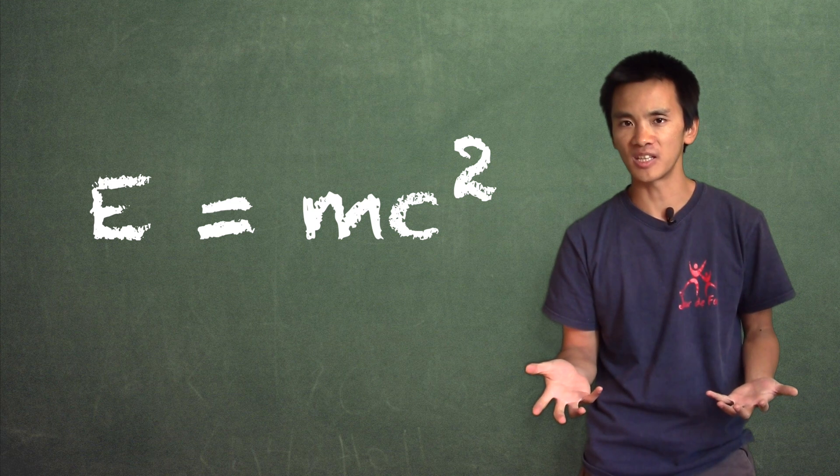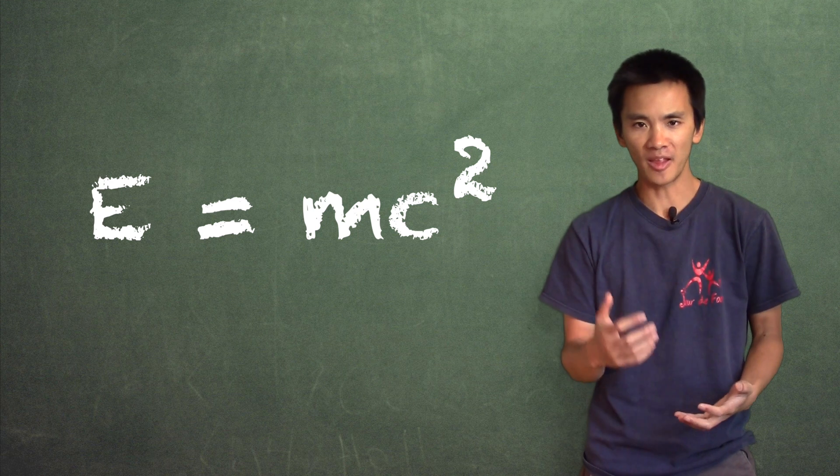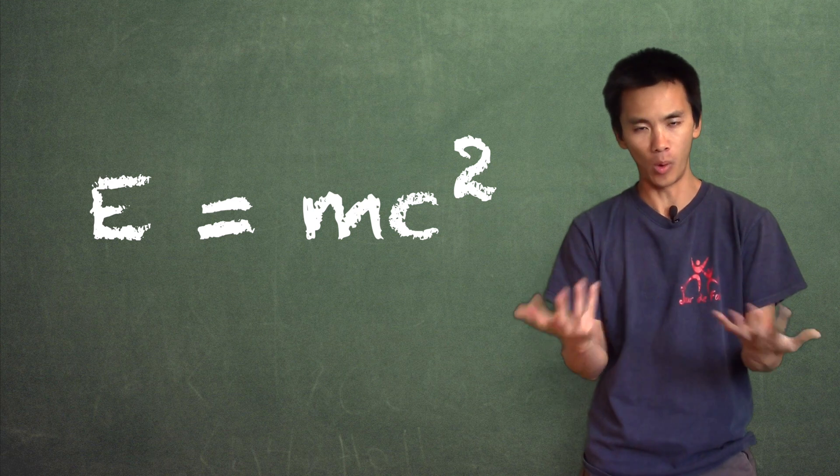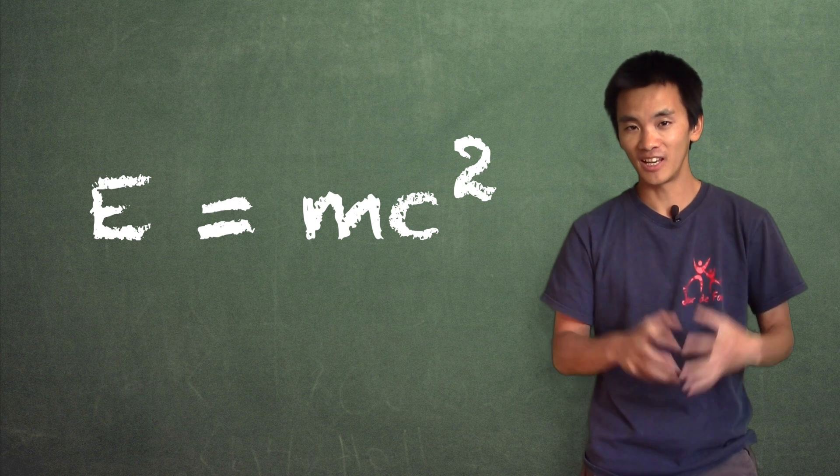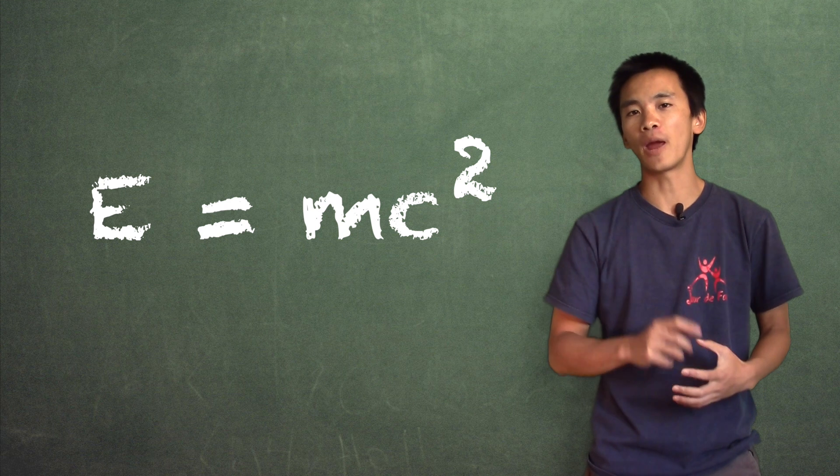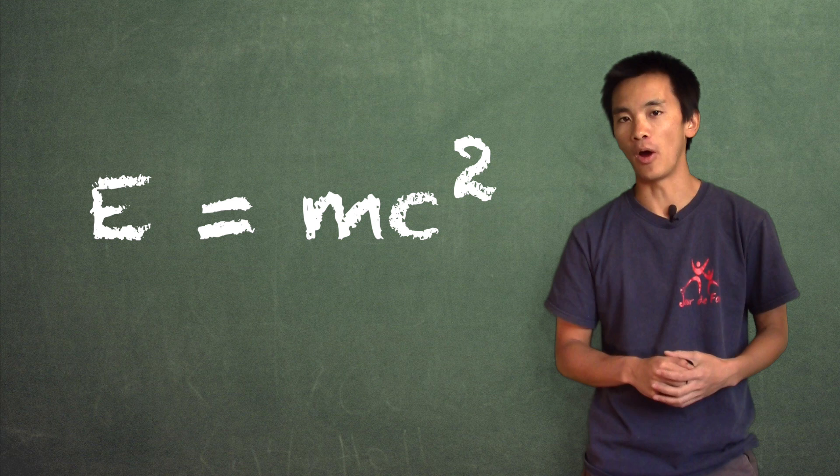But Einstein was unknown at that time. How did he convince the whole scientific community that this equation was worthy of anything at all? Well, the answer is that he proved it. He derived it from the single hypothesis according to which the speed of light is the same for everyone.